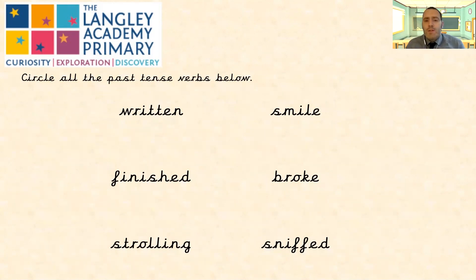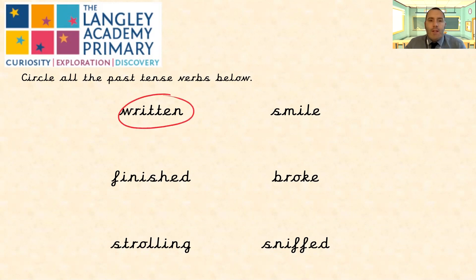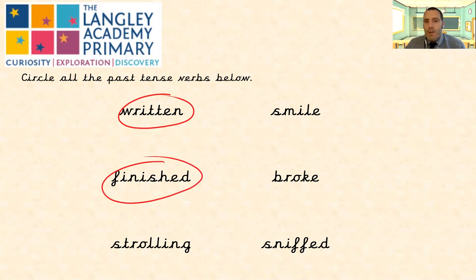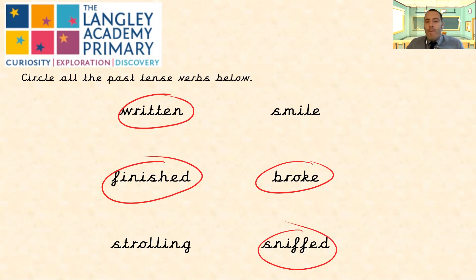Have a look at these verbs — which of these are written in the past tense? Make a list of the past tense words and pause the video here. If you got 'written' — well done — that's one of the exceptions to our rule; it's the past tense of 'write'. We've got 'finished' — well done. 'Broke' is the past tense of 'break' — another exception. And 'sniffed' has the 'ed' on it. So we've got two with 'ed' and two examples of words that don't follow the rule, because you wouldn't say 'righted' for 'write' or 'breaked' for 'break'.